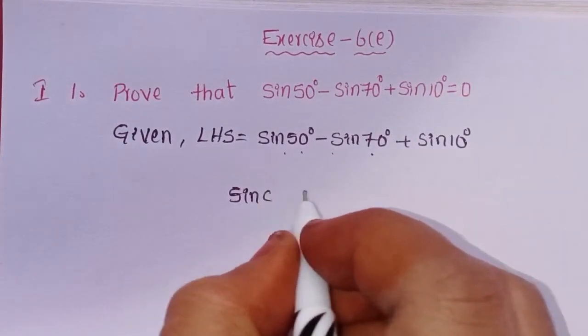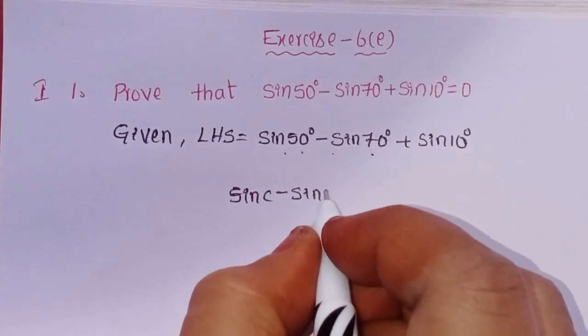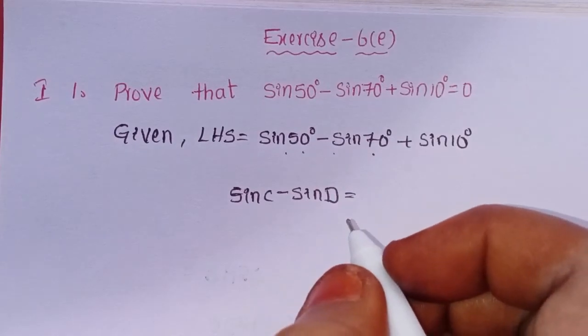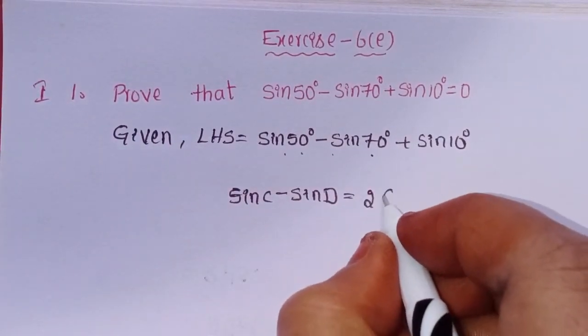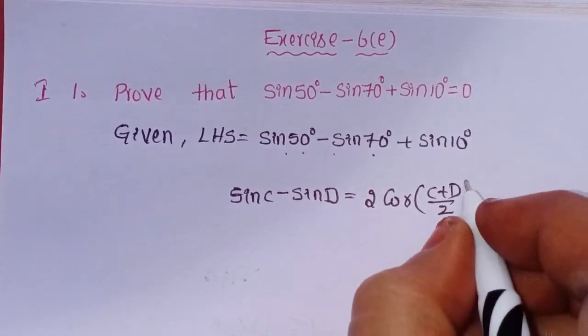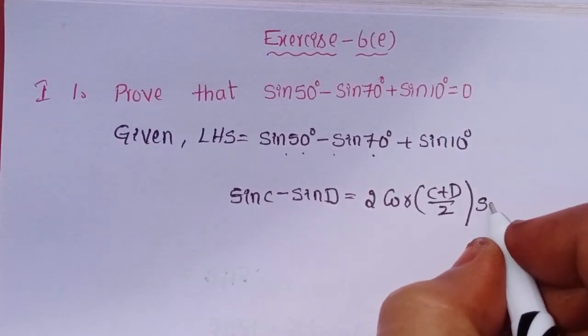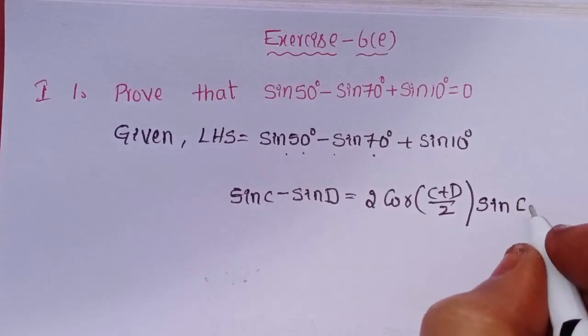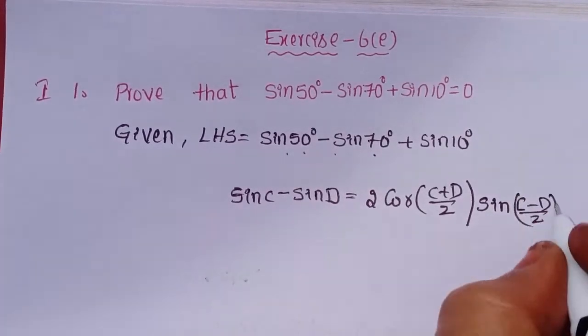Sin C minus sin D formula: 2 cos of (C plus D) by 2 into sin of (C minus D) by 2.